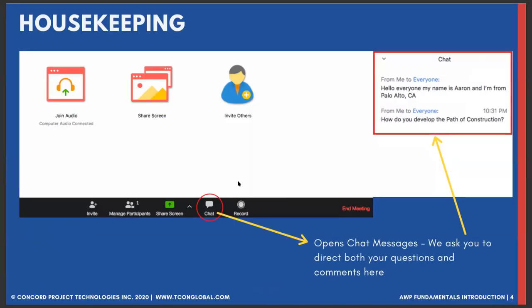Before we get into the topic, there are a few housekeeping details. We want to engage with you throughout the presentation. At the bottom of the webinar application window you will see a chat function bubble labeled with the word 'chat.' When you click on it, a conversation sidebar will open. Make sure your message is being sent to everyone, and add any questions you have into the chat — at the end we will do our best to answer as many as possible.